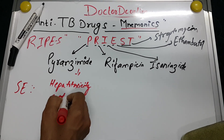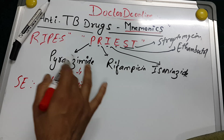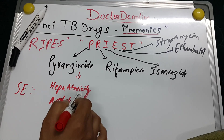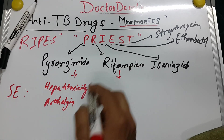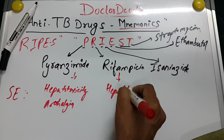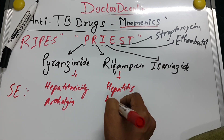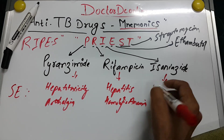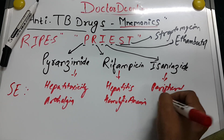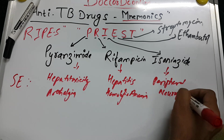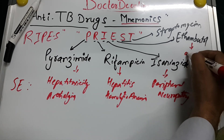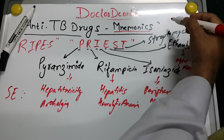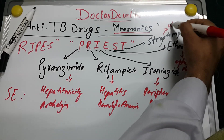Pyrazinamide's important side effects are hepatotoxicity and arthralgia. Rifampicin's side effects are hepatitis as well as hemolytic anemia. Isoniazid causes peripheral neuropathy. Ethambutol causes optic neuritis.